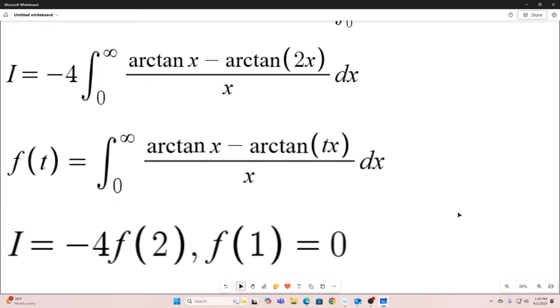And we will note that I is equal to negative 4 times our f of t evaluated at 2. If we take this f of t, multiply it by negative 4 and evaluate it at 2, we get the value of our integral. And of course, if we evaluate our f of t at the point t is equal to 1, we just get 0, because we just end up with arctan x minus arctan x in the numerator there. So that just goes to 0.